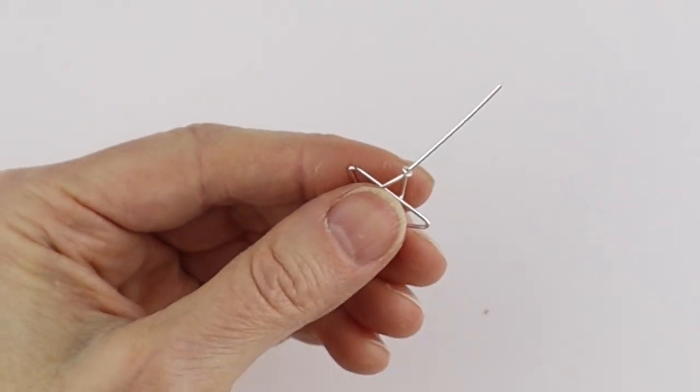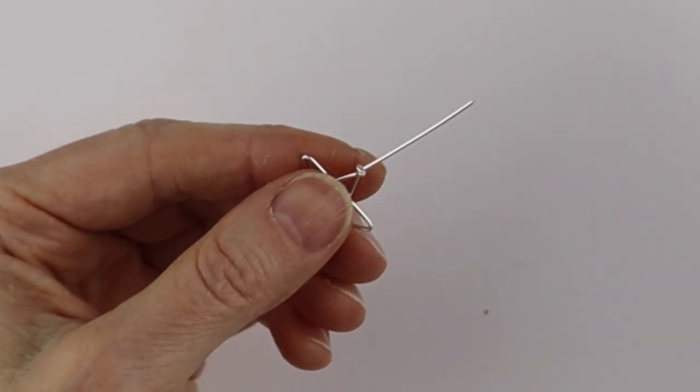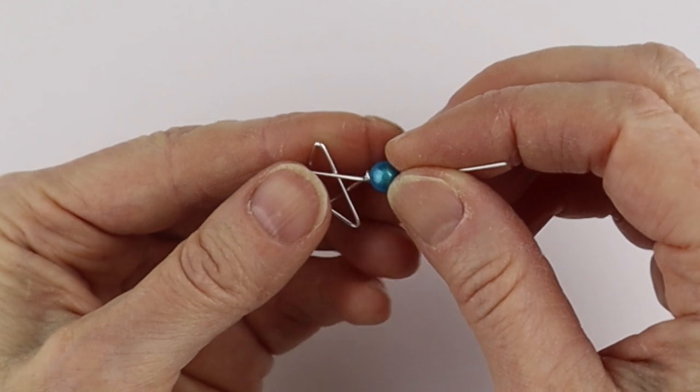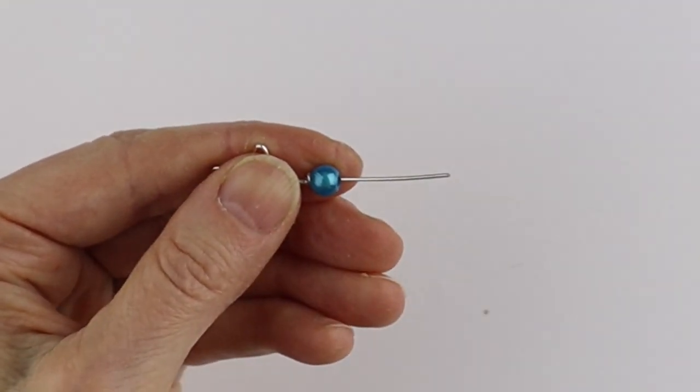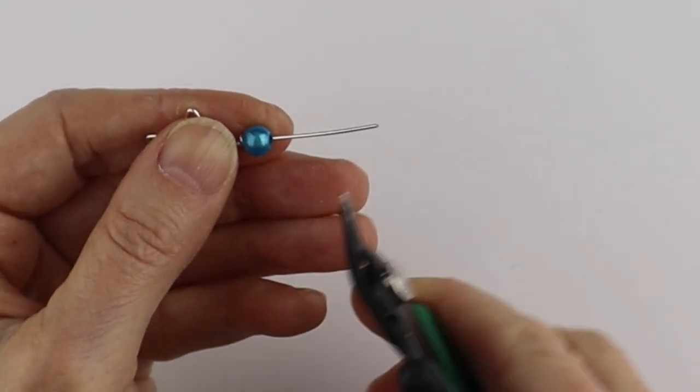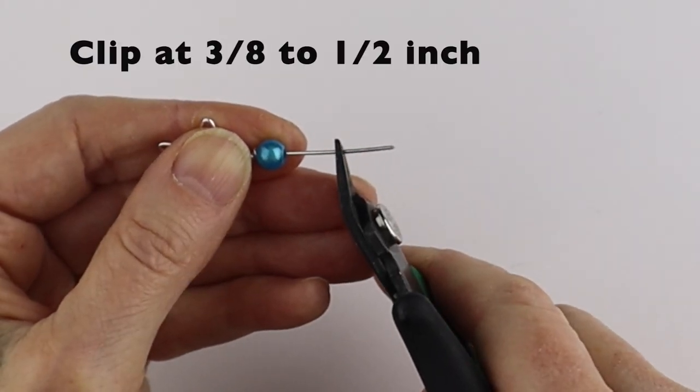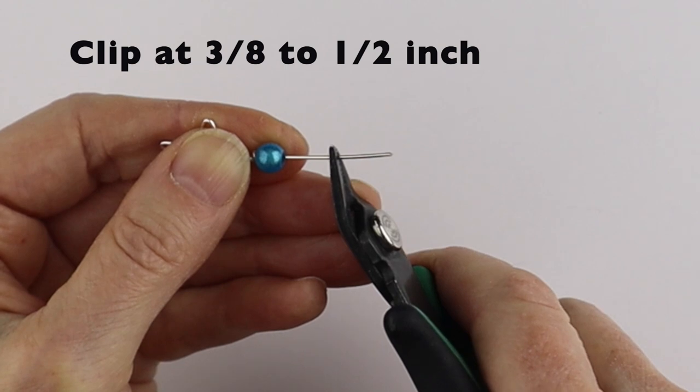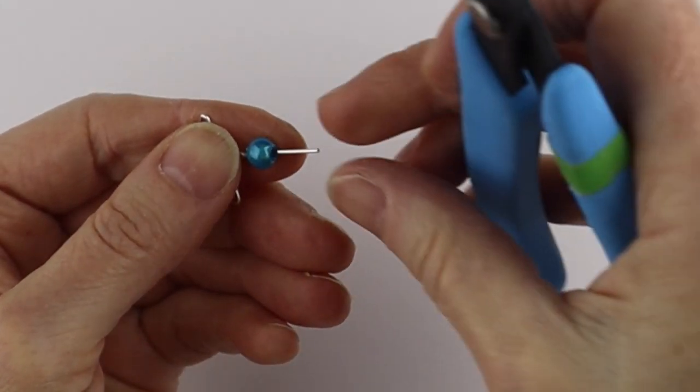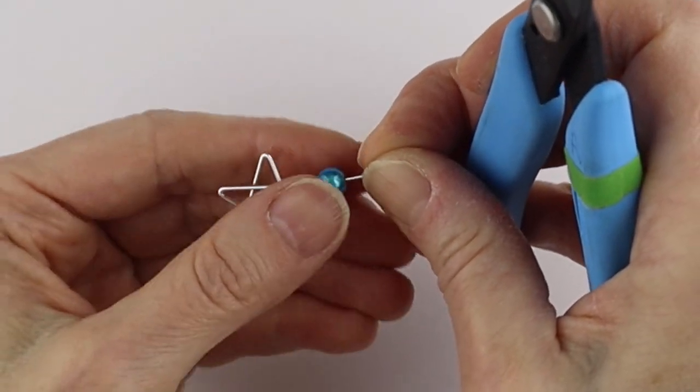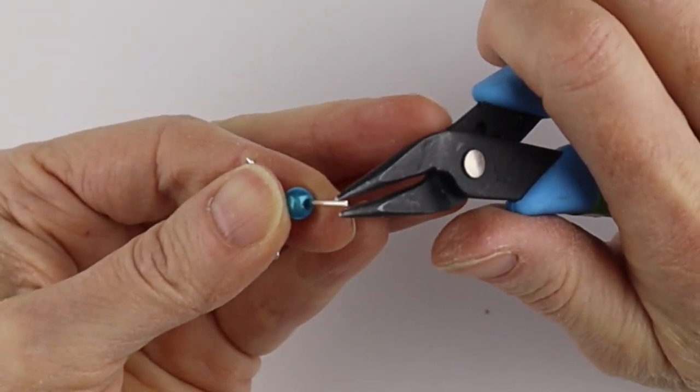Give it a little pinch so it holds in place without actually breaking the wire. And then what I like to do next is put your bead on right away. And I like to eyeball here three eighths to half an inch. So we're just going to take that and give it a little clip at that point.